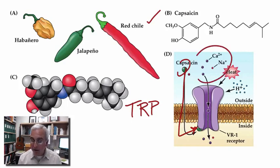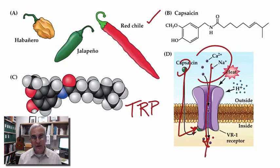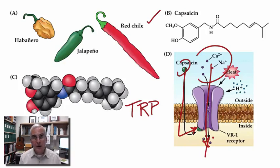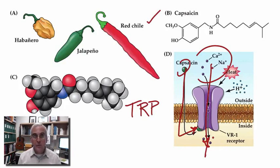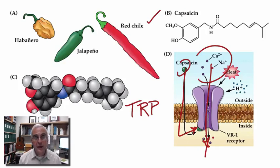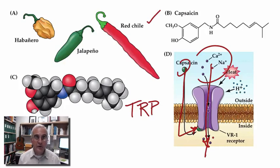When these channels open, cations like calcium and sodium can enter the terminal end of the free nerve ending, leading to depolarization. The influx of calcium can activate second messenger systems that further modify the response of this polymodal C fiber to complex stimuli, including organic compounds in foods we eat or environments we contact. Sensory transduction involves activation of these TRP channels leading to depolarization of the terminal membrane, generation of an action potential, and potentially more complex calcium-mediated responses within the cell.